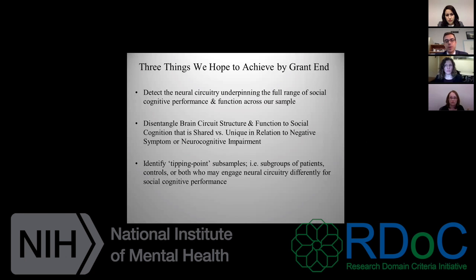That's really relevant for interventions when using target engagement based approaches, because you want to know what circuits different individuals are actually using during the task. A second point relates to shared variance: cognition, neurocognition, social cognition, and negative symptoms are all correlated, and we want to disentangle what those unique and shared aspects of variance are in relation to brain circuit structure and function. We don't want to be designing interventions for all groups of schizophrenia patients — we want to tailor them to subsamples depending on their circuit structure or activation properties during these tasks.